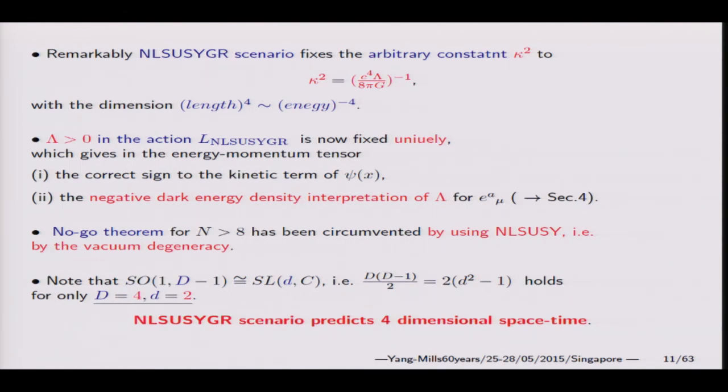Now this model predicts space-time dimension 4, because in this theory the isomorphism of SO(1,D-1) and SL(D,C) is important. This isomorphism holds only for D equals 4, four-dimensional Minkowski space. Therefore, this formalism holds only in four-dimensional.